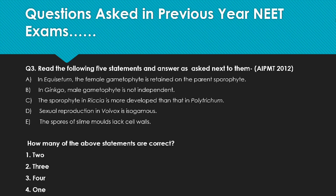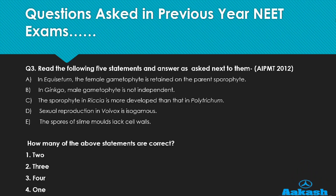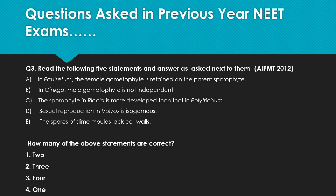Statement B: in Ginkgo, male gametophyte is not independent. We have already discussed that in gymnosperms, gametophyte is dependent on sporophyte — so this is a correct statement. Statement C: the sporophyte in Riccia is more developed than that in Polytrichum. The important NCERT line is that the sporophyte of mosses is more elaborate than that of liverworts. Riccia is a liverwort and Polytrichum is a hair cap moss, so the statement as given is wrong. Statement D: sexual reproduction in Volvox is isogamous — but in Volvox it is oogamous, so this is a wrong statement.